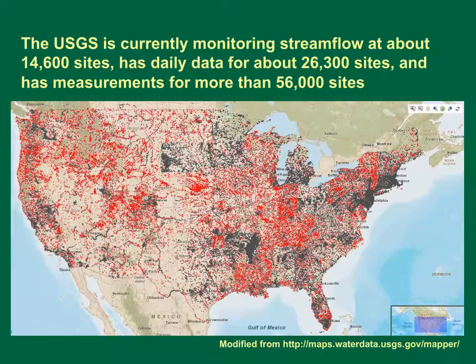The USGS is currently monitoring streamflow at about 14,600 sites, has daily data for about 26,300 sites, and has individual measurements for about 56,000 sites. Daily mean streamflow monitoring stations are known as stream gauges. This map shows the location of current stream gauges as gray dots and about 11,700 inactive stream gauges as red dots.